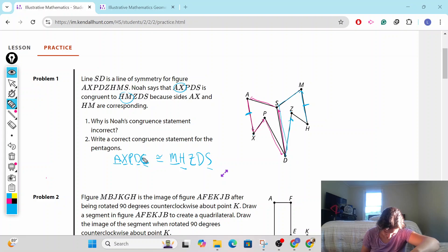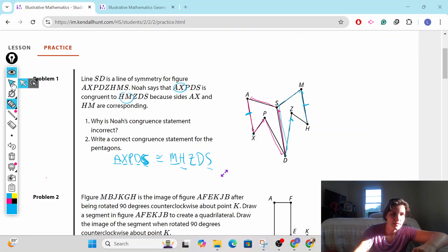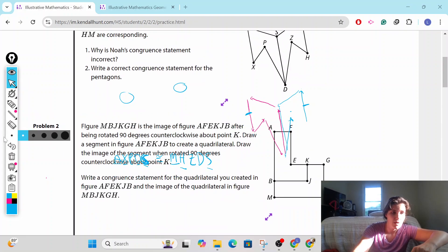This is an S, I'm sorry. Sometimes I get my C's and S's mixed up, especially when I'm talking and writing at the same time. So they should all correspond, which is why Noah was incorrect, and that's our correct congruent statement. Pause the video if you want to look that over, because we're going on to problem number two.